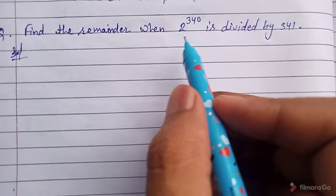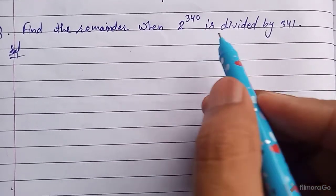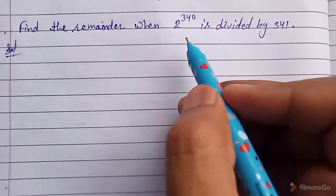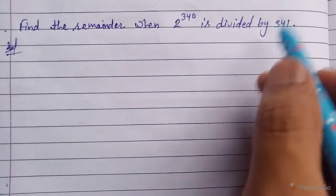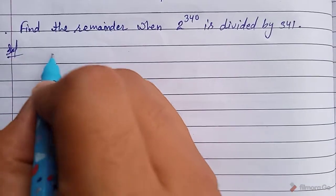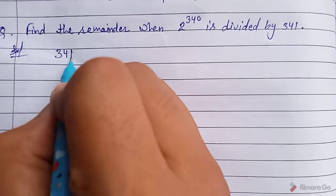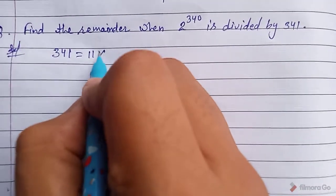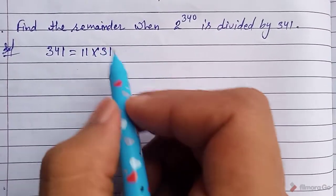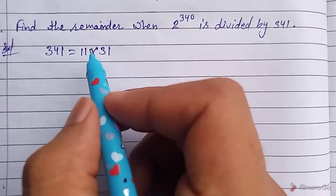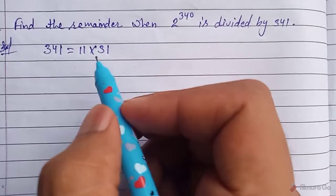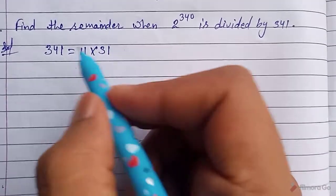Now let's look at a question based on this theorem. Find the remainder when 2^340 is divided by 341. Here 341 can be written as 11 × 31. So if I take m1 = 11 and m2 = 31, I can write congruences for m1 and m2, then for LCM(11, 31) = 341.